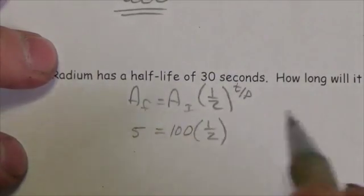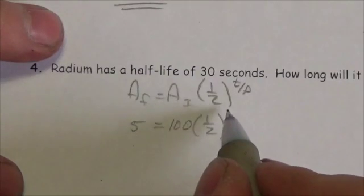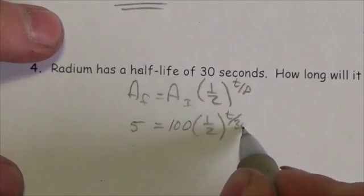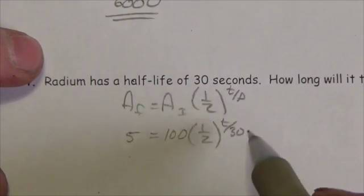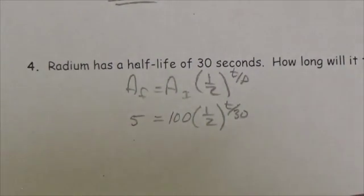So one half, and then this will be to the amount of time that's gone by, and we know this is going to be 30 seconds. So my answer t here is going to end up being in seconds, because the period is in seconds.